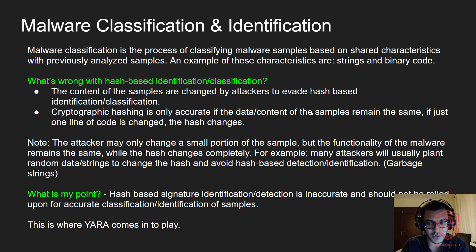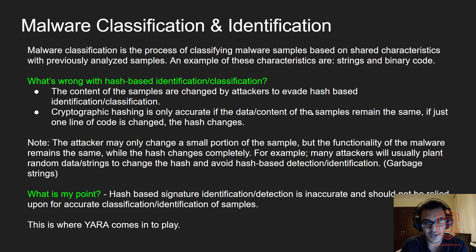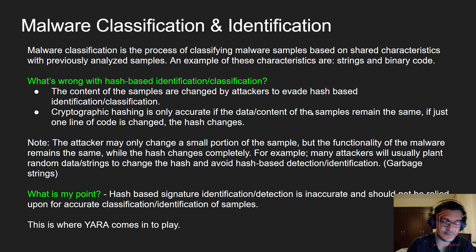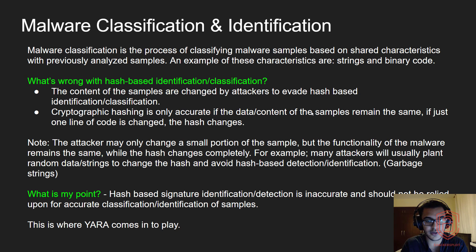One of the first issues is that the content of samples can be changed by attackers to evade hash-based identification. Attackers can change the content of the malware, which consequently changes the cryptographic hash — whether MD5, SHA-256, etc. Cryptographic hashing is only accurate if the content remains the same. If just one line of code is changed — for example, the first two bytes of hexadecimal data — the entire hash changes completely.